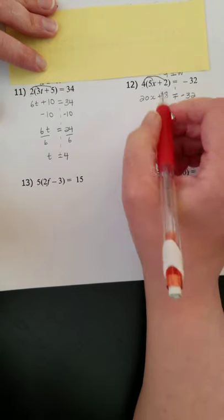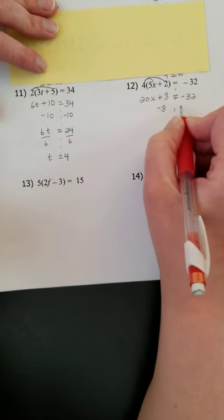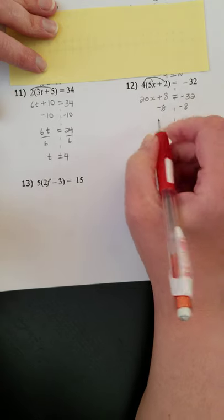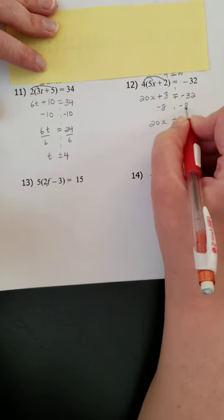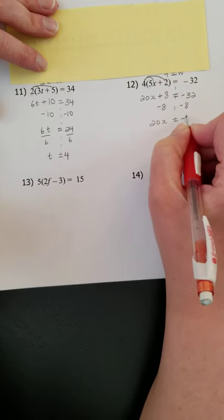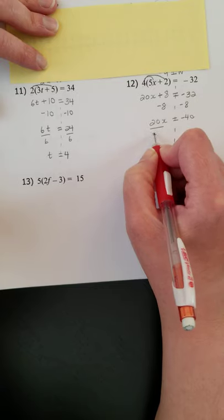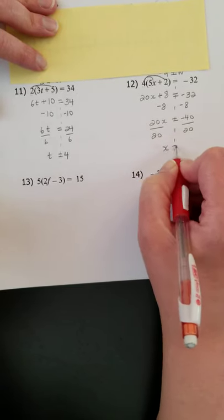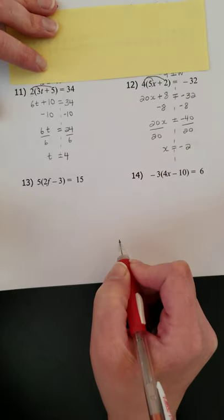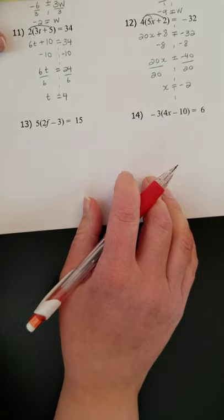Now I'm just solving a regular equation. Undo the adding or subtracting. I have plus eight. So I subtract eight on both sides. And I get 20X equals negative 32 minus eight more is negative 40. Then I undo the multiplication. So I've got 20 times X. I divide by 20 on both sides. X equals negative two. Okay. That's the answer there.